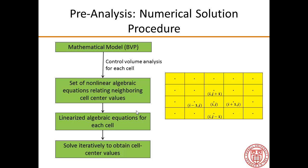The second aspect of pre-analysis is to think about the numerical solution procedure used to solve that mathematical model. The mathematical model is a boundary value problem: governing equations plus boundary conditions. Through the finite volume method, which does a control volume analysis for each cell, it derives a set of algebraic equations. These algebraic equations relate velocity and pressure at neighboring cell center values.